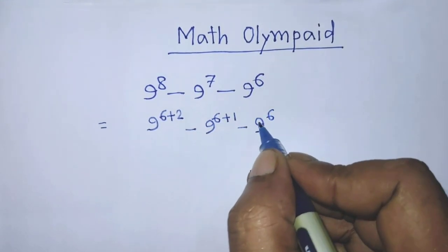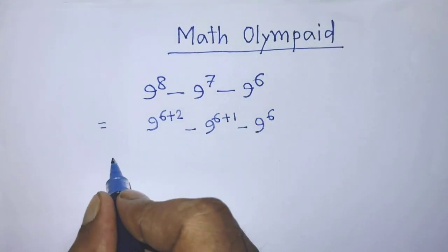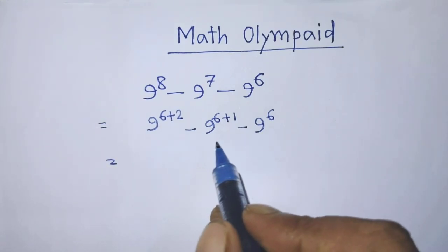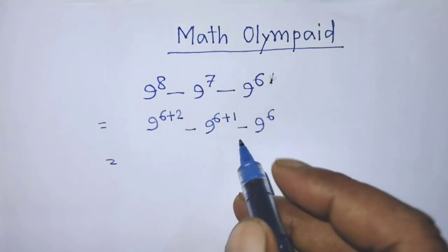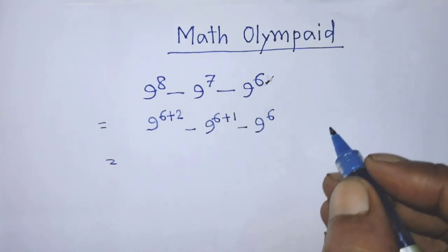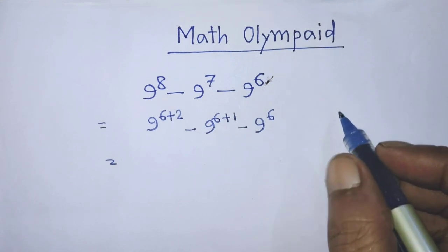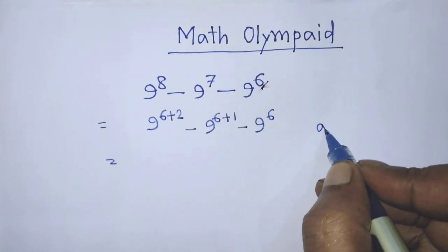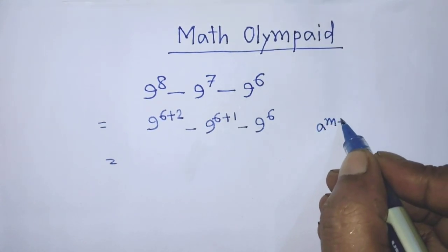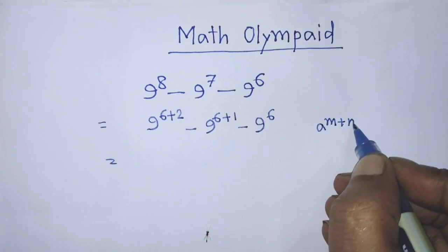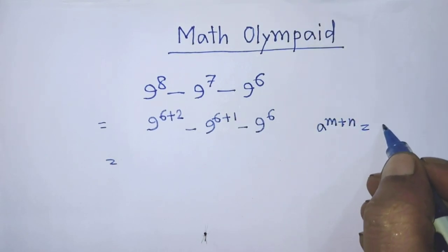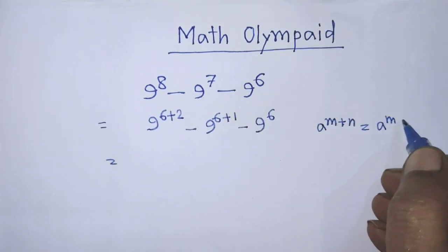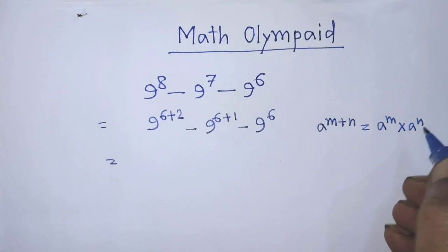To simplify the first two terms of this algebraic expression, we apply the formula: a to the power m plus n is equal to a to the power m, times a to the power n.